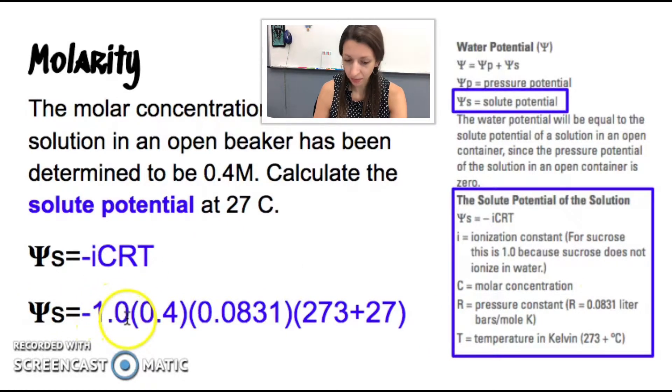So negative I is 1.0. And I did something really bad. I did not include my units in this formula. So please make sure you do that. But the next one is C, our molar concentration. Great. We're given that as well. R is our next variable. And this is going to be the pressure constant. And this is also a given. And it's also on your formula sheet. So that's great.